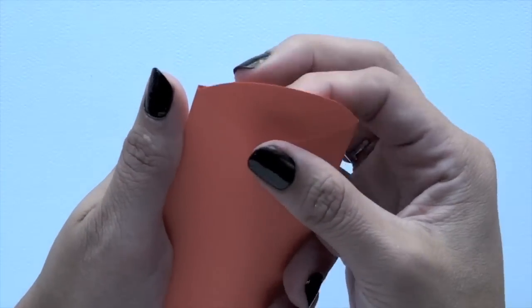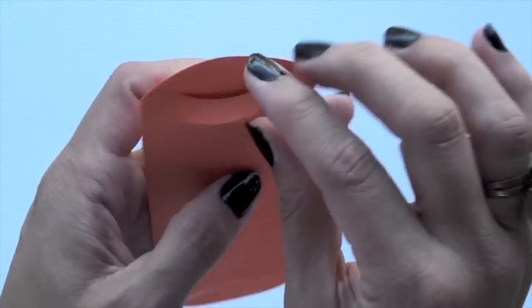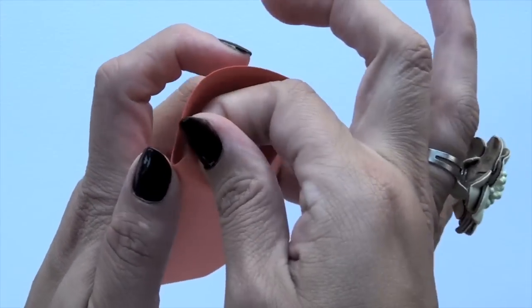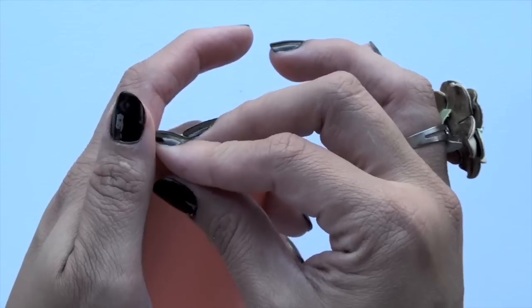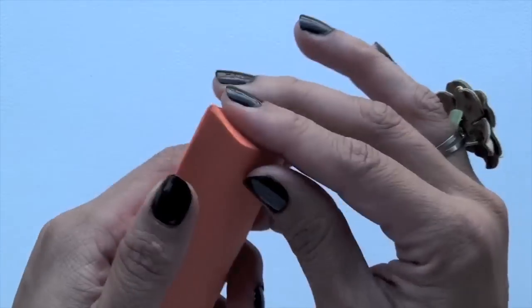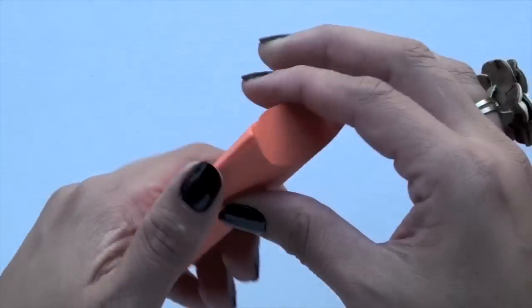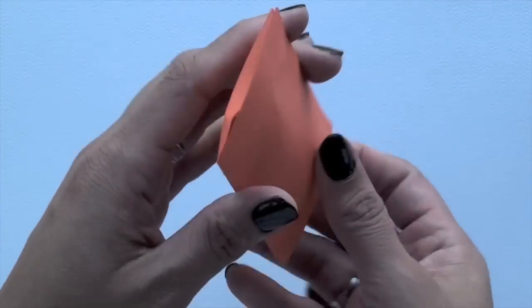Then on either end, since you creased it well, this is where this comes in handy. You're just going to bring those tabs down. You can put a little bit of glue on the little tabs if you want, like right there, but really there's no need since it is going to be held together with some tulle.